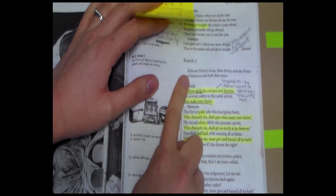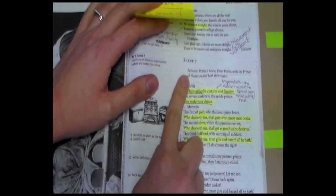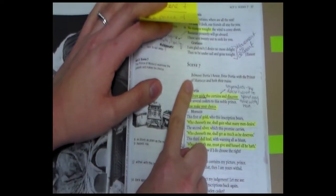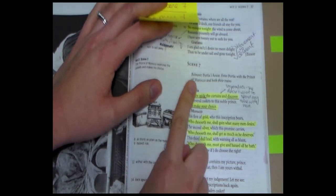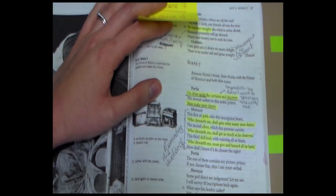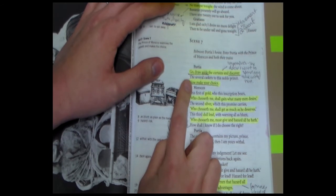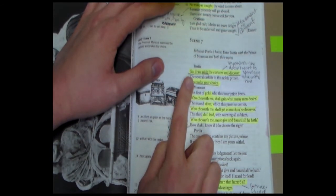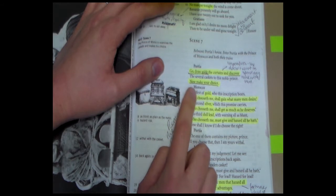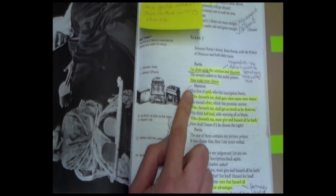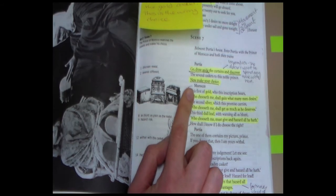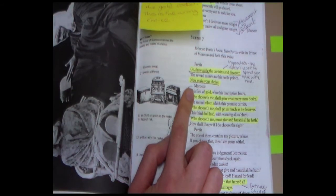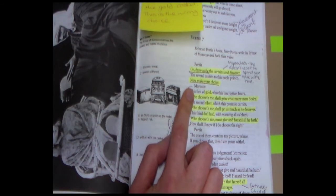Scene 7 sees us again in Belmont at Portia's house, so we know that this is the land of romance rather than the land of the merchants in Venice. We see Portia speaking in imperatives at the start of the scene: go, draw aside the curtains and discover, and she says now make your choice. She's trying to spend as little time as possible with the Prince of Morocco and she doesn't want to converse with him more than she needs to, so the instructions are very direct.